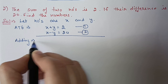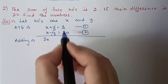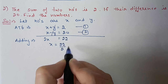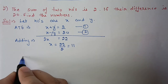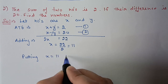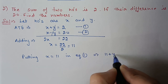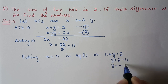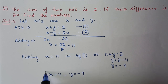Adding equations 1 and 2: x + x = 2x, y − y eliminates, and 2 + 20 = 22, so x = 22 ÷ 2 = 11. Substituting x = 11 in equation 1: 11 + y = 2, so y = 2 − 11 = −9. Therefore x = 11 and y = −9.